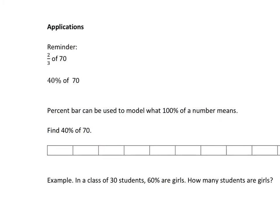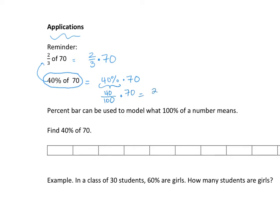Now, a little reminder: we're going to look at some application problems using words like '40% of 70.' We've seen two-thirds of 70, which just means two-thirds times 70. So 40% of 70 is like 40% times 70. We can rewrite this as 40 hundredths times 70 — that's 2800 divided by 100, which is 28. Another way is to rewrite 40% as the decimal 0.4, multiply by 70. We can multiply 70 and 40 to get 2800, then place two decimal places, getting us 28 as well.